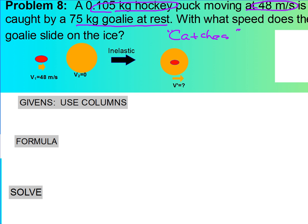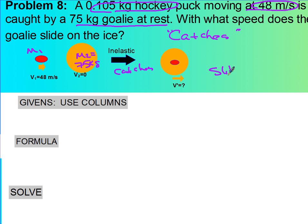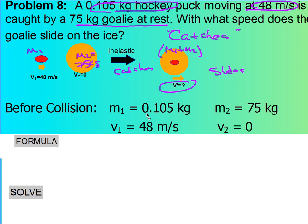First, draw a diagram. Here is my hockey puck — 0.105 kilograms — moving at 48 meters per second. And here is my second mass: the goalie, and he's at rest. There's a collision — this is where he catches it — and then he slides off. So the goalie plus the hockey puck slide together, and we're looking for the final velocity. For our givens, before collision: M1 is 105 kilograms, M2 is 75 kilograms, V1 is 48 m/s, and V2 is 0.